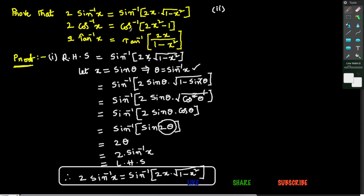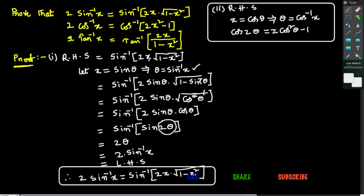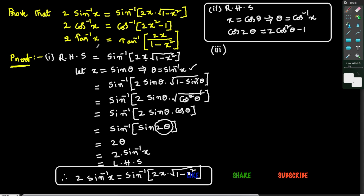Similarly, you can prove the second result: 2 cos⁻¹x = cos⁻¹(2x²−1). Here are some hints: start by taking RHS, then let x = cos θ, from which θ = cos⁻¹x. In the process of simplification, use the formula for cos 2θ. Using these hints, you can prove the second result easily.